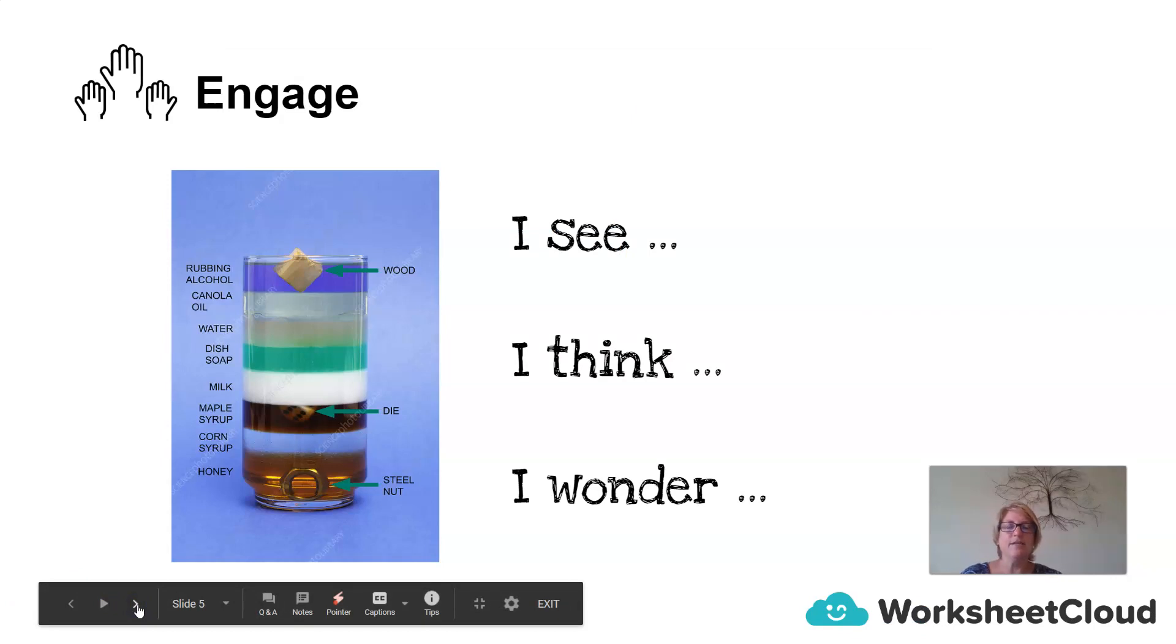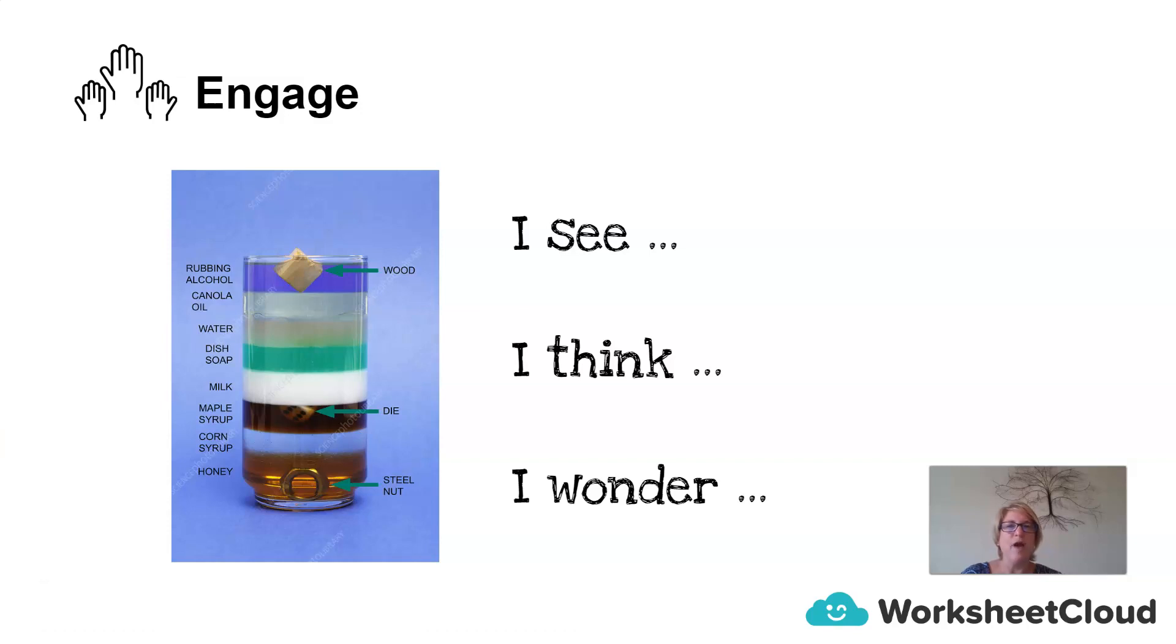The first activity I'd like you to engage in this morning is I see, I think, I wonder. What that entails is you having a look at the picture on the left. Get up close to the screen, it really is an amazing picture. We have different types of alcohol, rubbing alcohol which is like methylated spirits. Then we have canola oil and another layer of water, and then another layer of dish soap and milk and syrup and honey. And then in between all of this, we've got some solid substances that appear to be floating like wood and a dice and a steel nut.